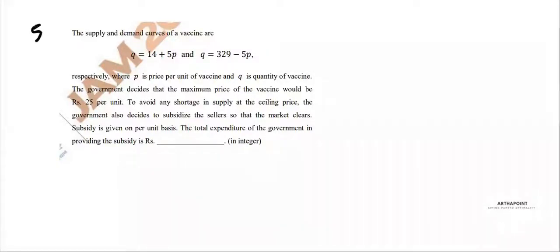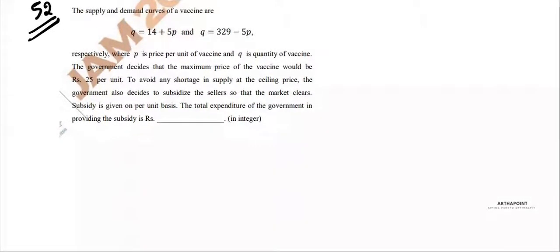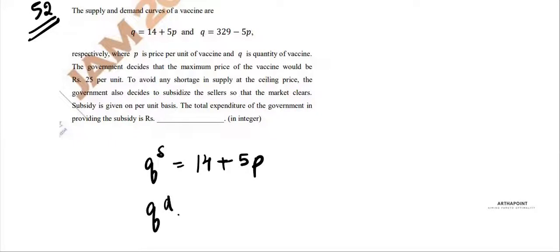This is question number 52 of IIT JAM paper. You are given a demand curve and a supply curve. The equation of the supply curve is 14 plus 5p — I know this is the supply curve because there is a positive relation between price and quantity. The demand curve is given as 329 minus 5p.